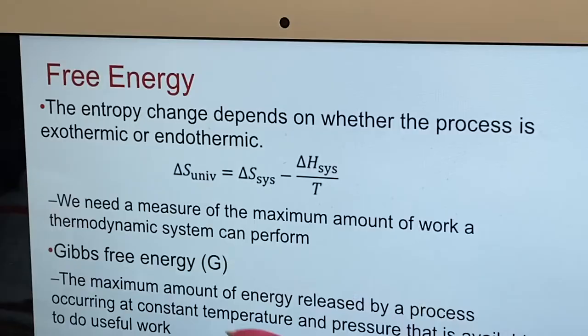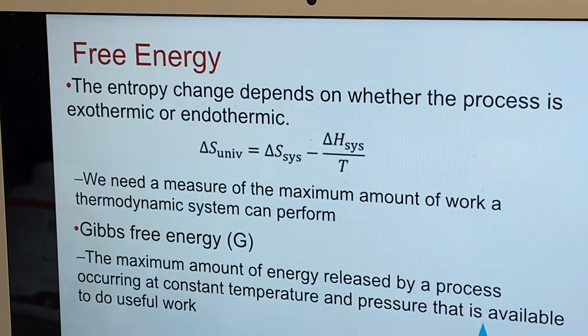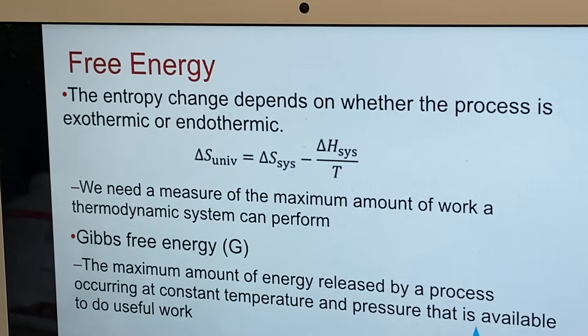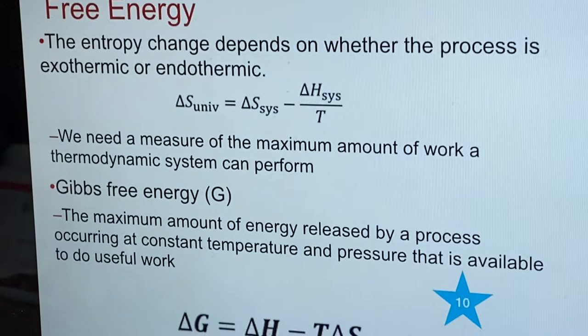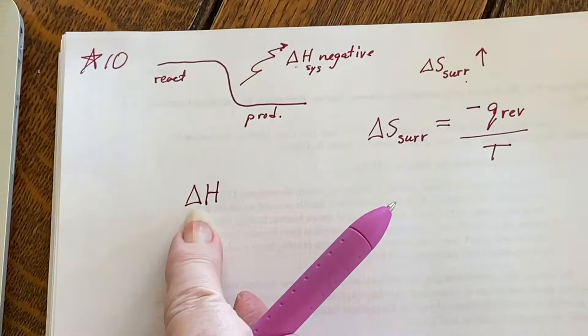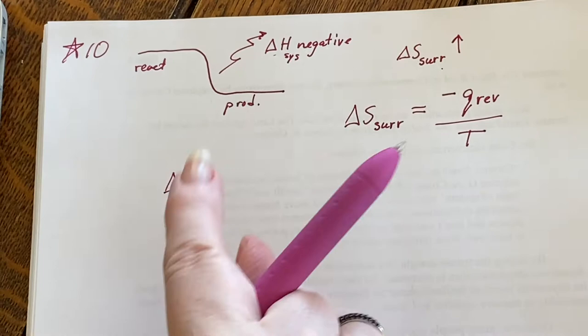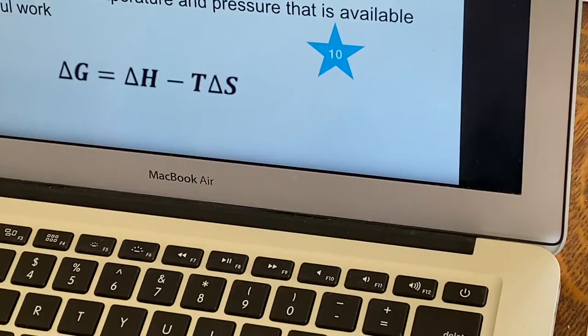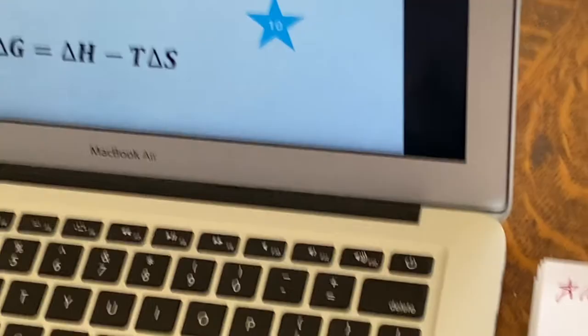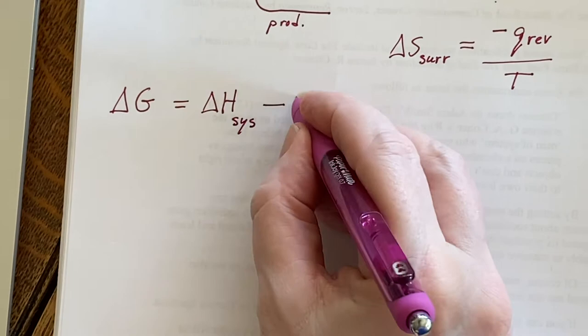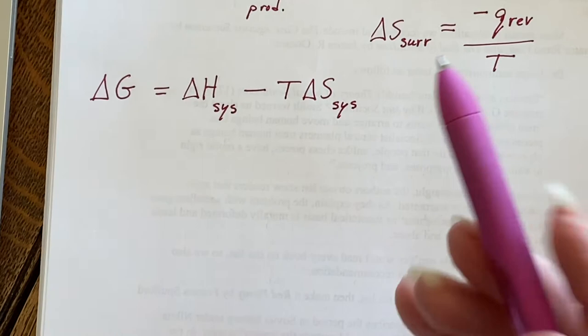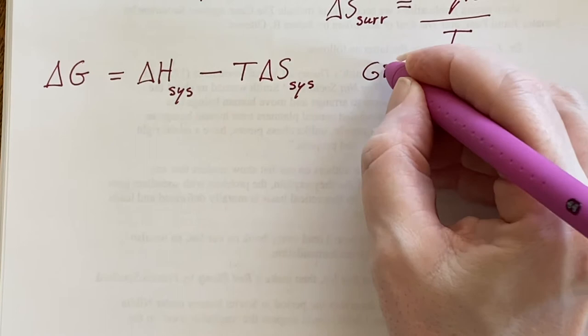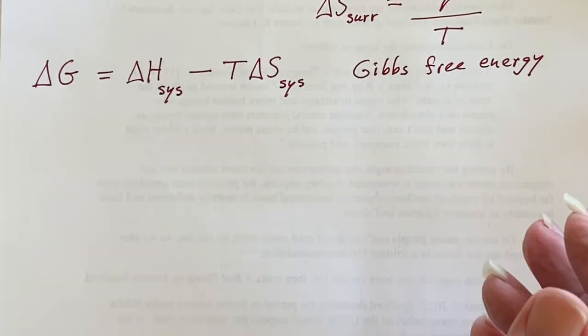Measuring the change in entropy of the universe is really difficult and not practical at all. That is why we use Gibbs free energy — so we compare what happened with the enthalpy, which gives rise to delta S of the surroundings, with what happened with the delta S of the system. Using this new formula, everything is generated by the system, making it much easier to measure. We've switched to Gibbs free energy so everything we work with concerns only the system.